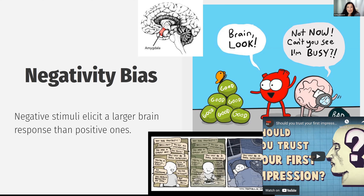Differences in negativity bias have been linked to political ideology. Some research suggests that conservatives might have stronger psychological responses to negative information than liberals. Some evidence has found that people who consider themselves politically conservative are more likely to rate ambiguous stimuli as threatening. But this is probably more a function of how motivated they are to check that bias — because we all probably have this negativity bias, and you can even push more politically liberal people into focusing on negativity if you set up the situation right.